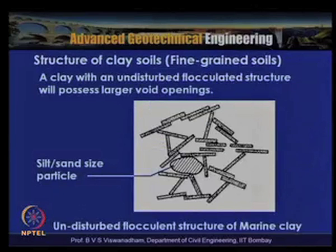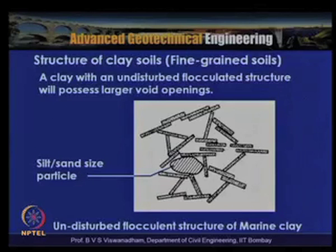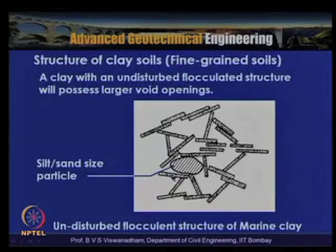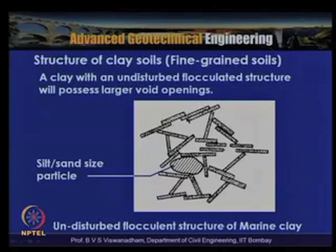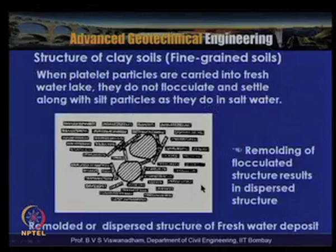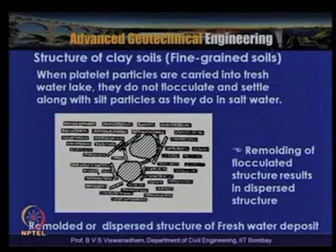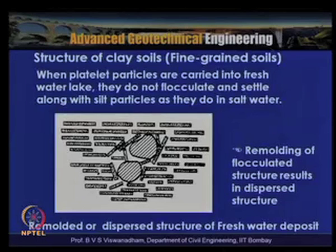The undisturbed flocculated structure of marine clay is shown schematically. A clay with an undisturbed flocculated structure will possess large wide opening spaces with silt particles shown schematically. This undisturbed flocculated marine clay has large wide openings with edge-to-face and edge-to-edge orientations. When platy particles are carried into a freshwater lake they do not flocculate as they do in salt water, so remolding of the flocculated structure results in a dispersed structure.